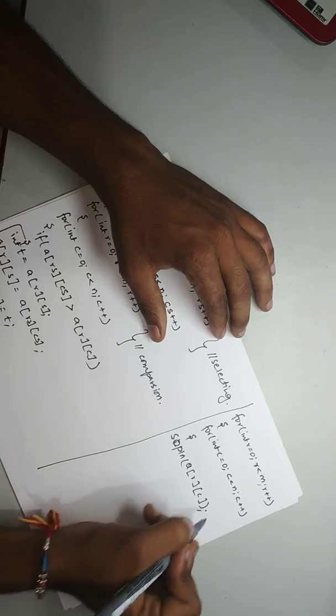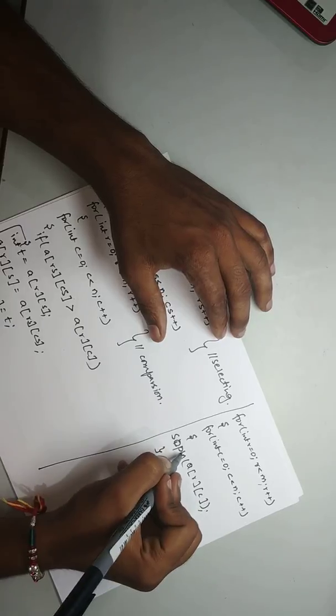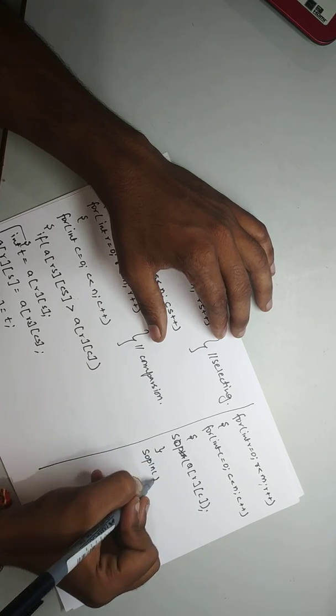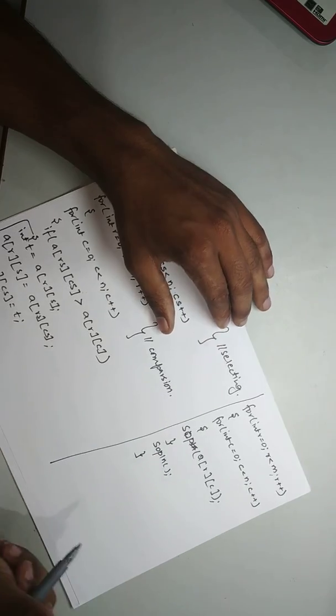Then we can say system.out.print a[r][c]. Then here will write sop and after that to print in the form of matrix sopln.